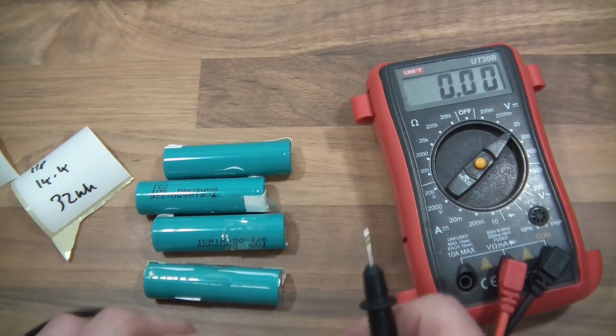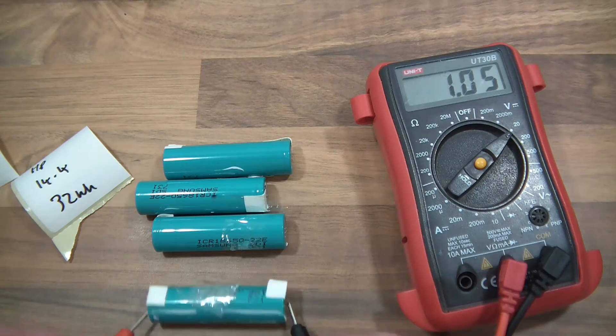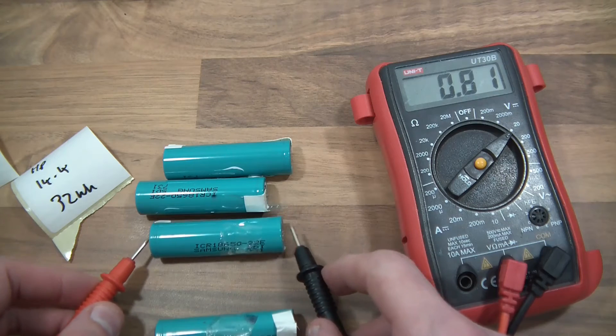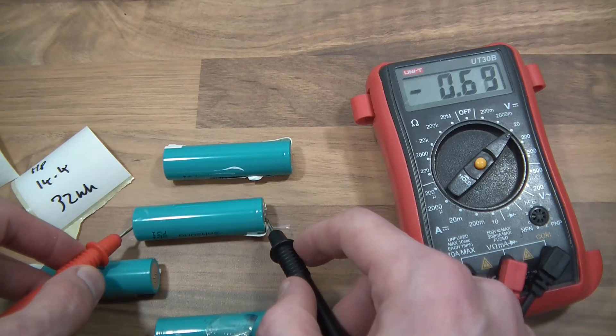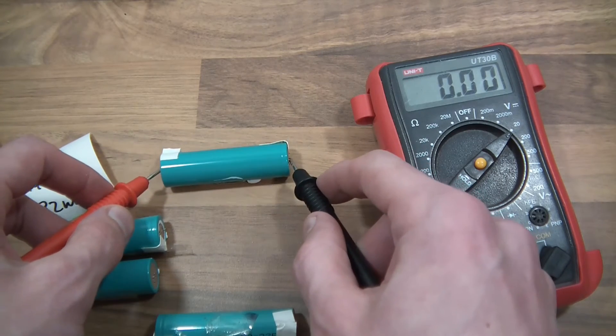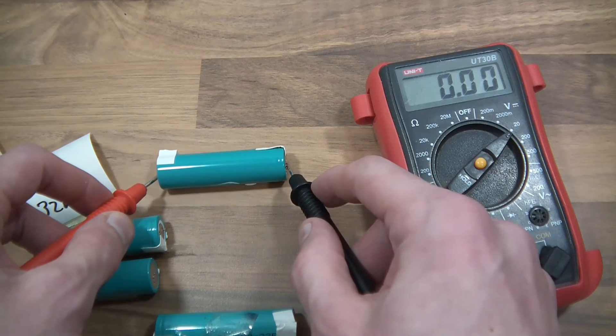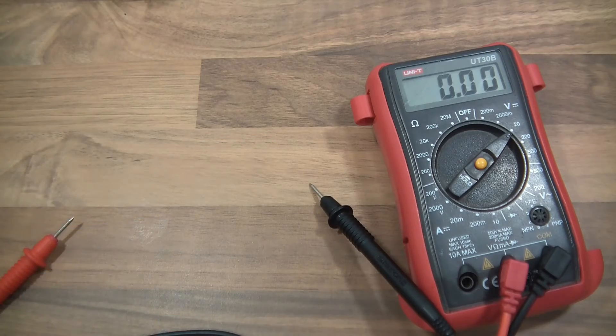These are Samsung cells, so let's see what happens. The 1V bag, 0V, 0V and dead. Next one, these are Sony cells.